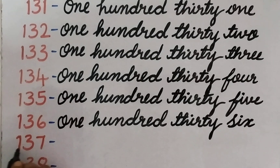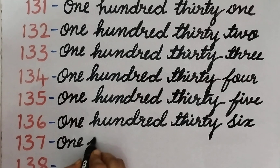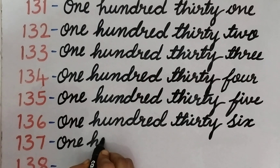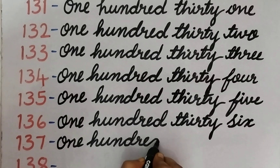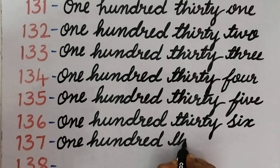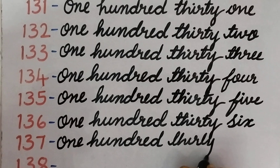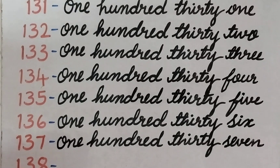Next, 137. O, N, E — 1. H, U, N, D, R, E, D — 100. T, H, I, R, T, Y — 137. S, E, V, E, N — 7.